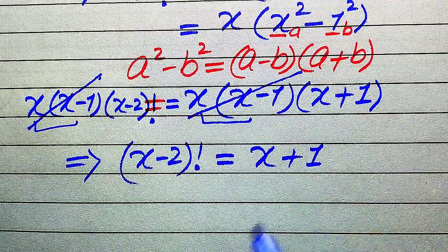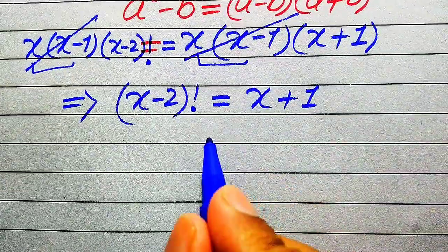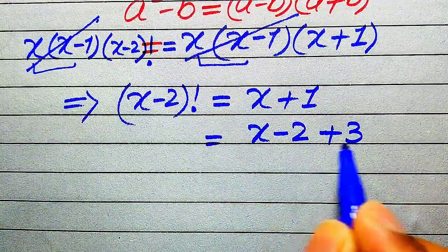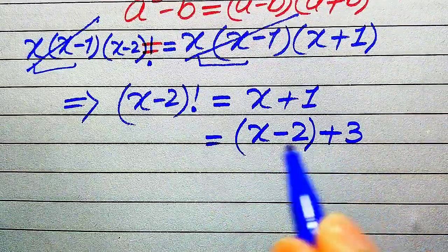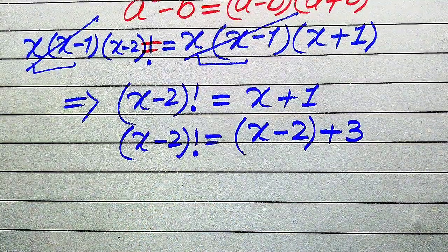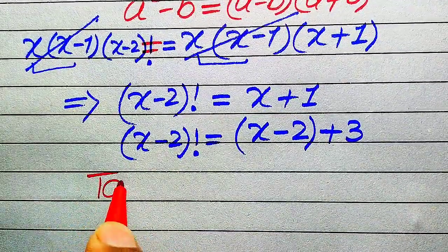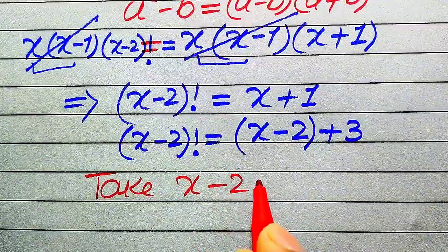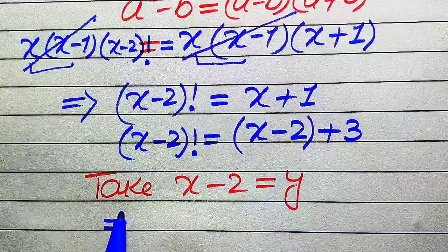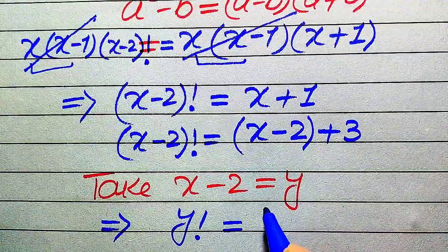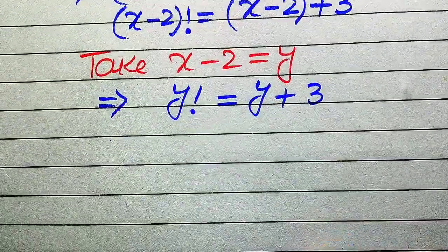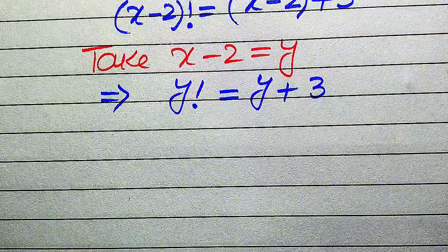Now we rewrite x plus 1 as (x minus 2) plus 3, since minus 2 plus 3 equals 1. On both sides we now have (x minus 2) as a common term, so we substitute y equals x minus 2. Our equation becomes y factorial equals y plus 3. This simplifies our cubic equation into a simpler form.